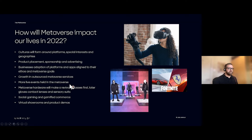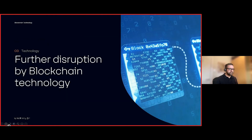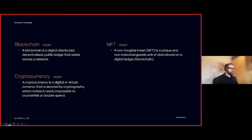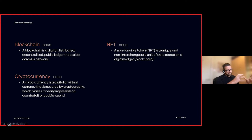The next trend is further disruption by blockchain technology. Blockchain is a digital, distributed, decentralized public ledger that exists across a network — think of it as fully transparent bookkeeping with no mechanism to illegitimately edit those records. Combined with the ability to execute smart contracts that can facilitate transactions in a trustless way, it's easy to see why this technology is going to disrupt everything.